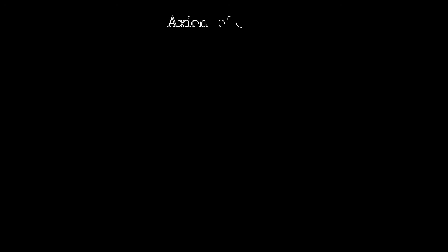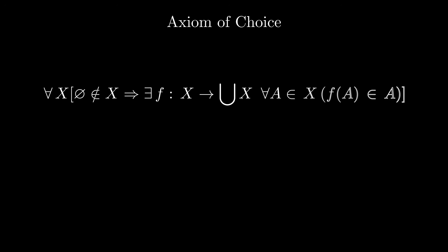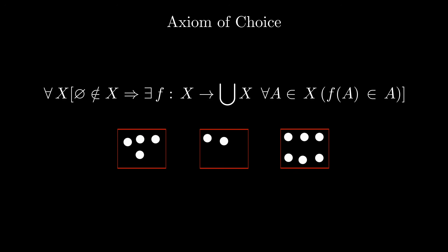But there is one special axiom that has caused a lot of controversy: the axiom of choice. In human language, it states that for any collection of non-empty sets, there is a way to choose exactly one element from each set — i.e., there is a choice function.